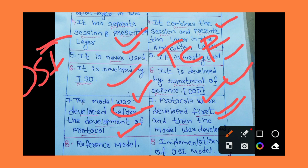OSI is a reference model — Open System Interconnection — it is a theoretical design. The practical implementation is TCP/IP. The implementation of the OSI model in practice is TCP/IP.